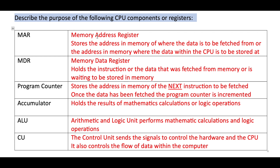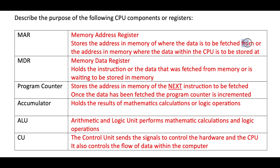The MAR stands for the Memory Address Register, and it stores the address in memory. It's very important to remember we're storing the address in memory of where the data is to be fetched from, or where data currently within the CPU is to be stored. It's a two-way process: it either stores the address of where we fetch data or instructions from, or the address of where we want to store data within memory.